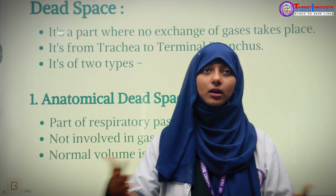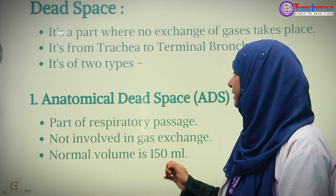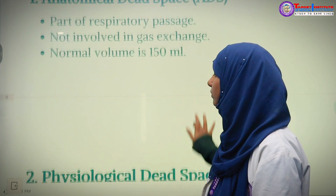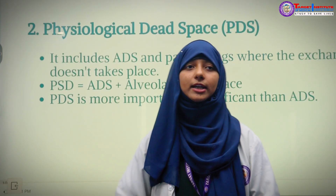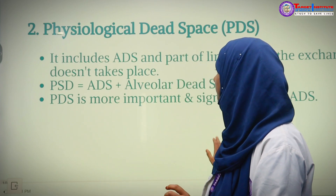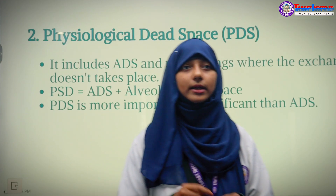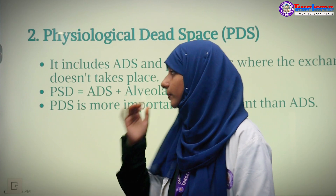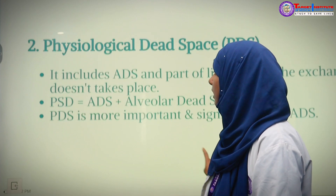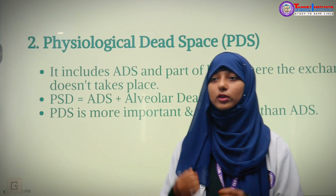Anatomical dead space is a part of the respiratory passage. Physiological dead space includes both anatomical dead space and alveolar dead space. Alveolar dead space is the area within the alveoli where gas exchange does not occur. Therefore, physiological dead space equals anatomical dead space plus alveolar dead space.